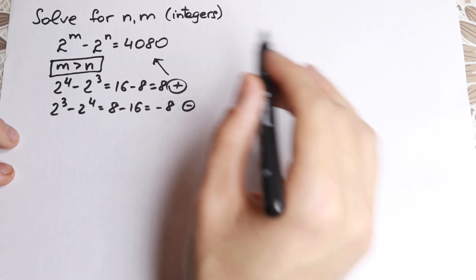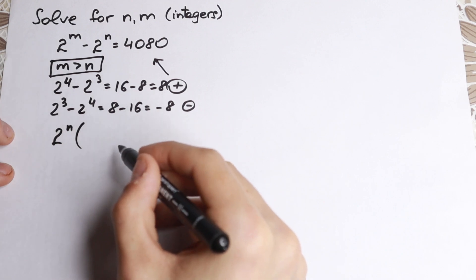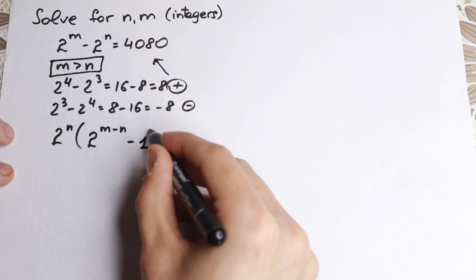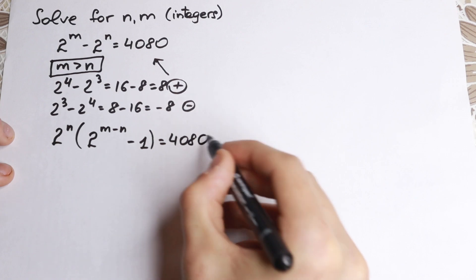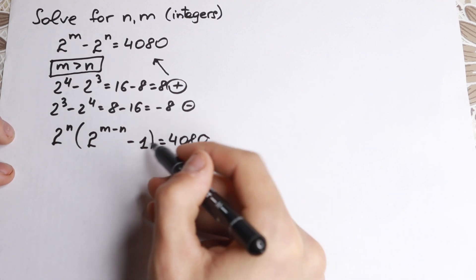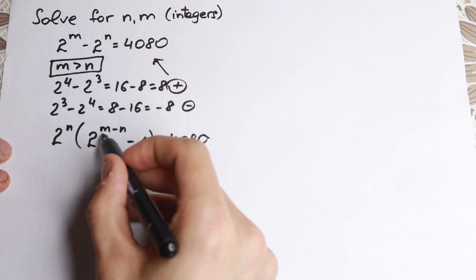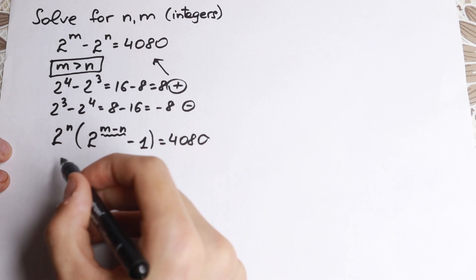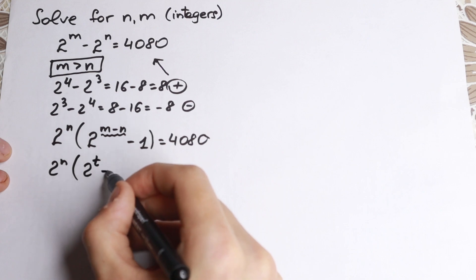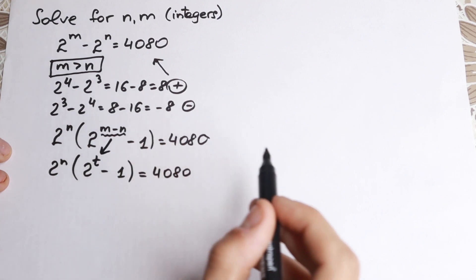Next, let's factor 2 to the n from this expression. If we factor 2 to the n, in parentheses we will have 2 to the power m minus n, minus 1, equal to 4080. Then let's substitute m minus n as t, so we will have 2 to the power n times 2 to the power t minus 1, equal to 4080. This is a little bit easier — substituting t for m minus n.